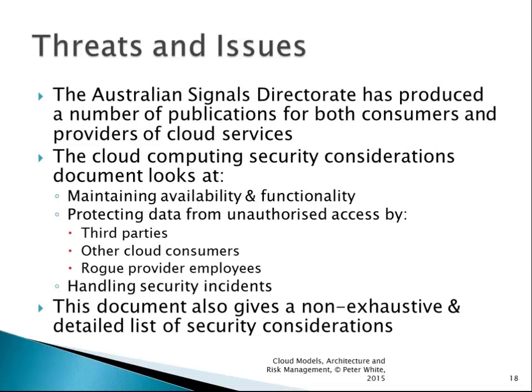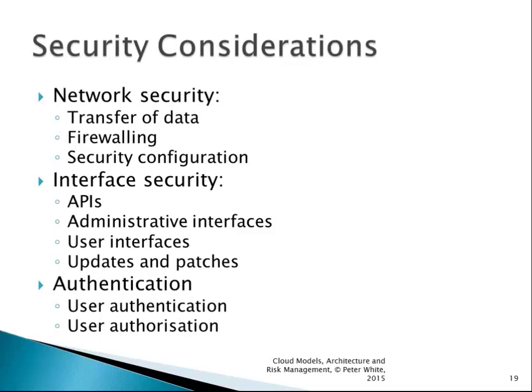Security considerations from the ASD include network security — how are you doing transfer of data, firewalling, and security configuration? Interface security covers your APIs, administrative interfaces, user interfaces, and updates and patching. If you're surfacing an API on the web through an IaaS, PaaS, or SaaS service, you need to make sure your API is secure both from your side and secure for your clients to use. The administrative interface — where you access the cloud to administer rented services — should be controlled with good security.